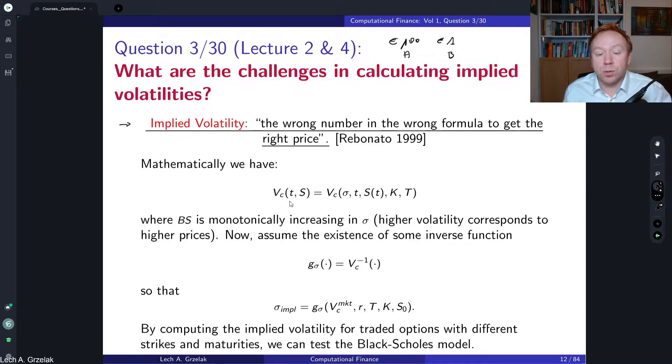Therefore this formula really nicely explains the whole process of finding implied volatilities. Mathematically, if we talk about the call options price, the same will hold for puts. We have in the case of Black-Scholes we have a sigma.